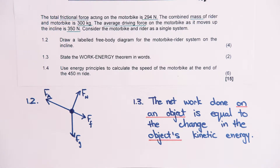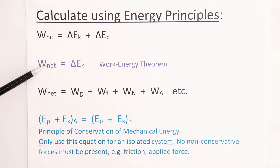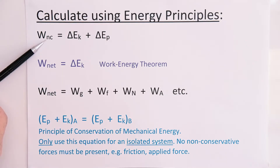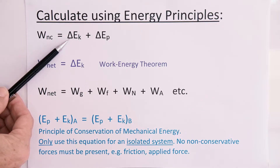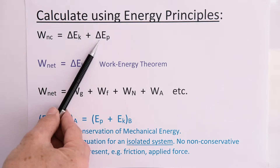Question 1.4: use energy principles to calculate the speed of the motorbike at the end of the 450 meter ride. When they say 'use energy principles,' you will use one of four equations. The first is: work due to non-conservative forces equals the change in mechanical energy. Non-conservative forces include friction, air resistance, and applied forces. Mechanical energy is the sum of kinetic and potential energy, so work due to non-conservative forces equals the change in kinetic energy plus the change in potential energy.